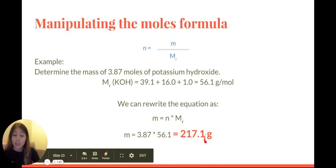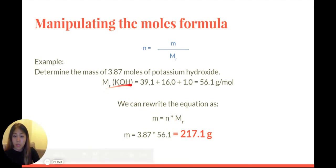Notice in this case, this is looking at the mass. So if you were given potassium hydroxide, you could use a balance, an electronic balance or a triple beam balance, and you can measure 217.1 grams.